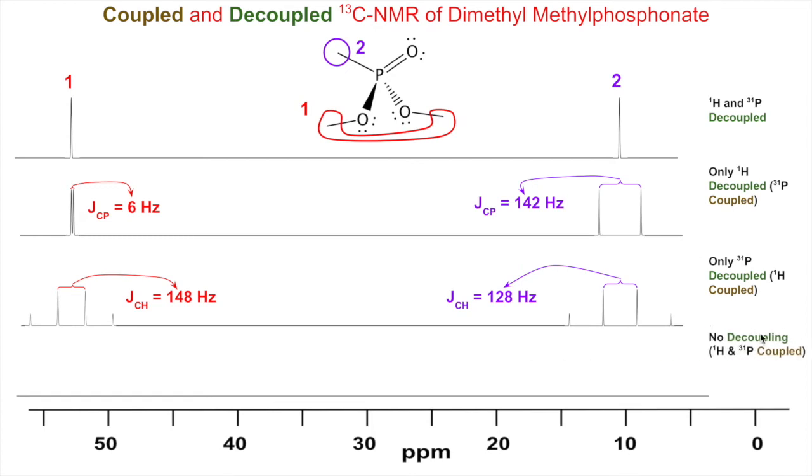Finally, the complicated one—we're not going to decouple anything. The protons H-1s and the phosphorus P-31 are both going to be able to couple. Whoa, look at that! This carbon has hydrogens directly attached to it—three of them. It gets split into a quartet and then gets long-range coupling from the phosphorus which splits each of those into little doublets.